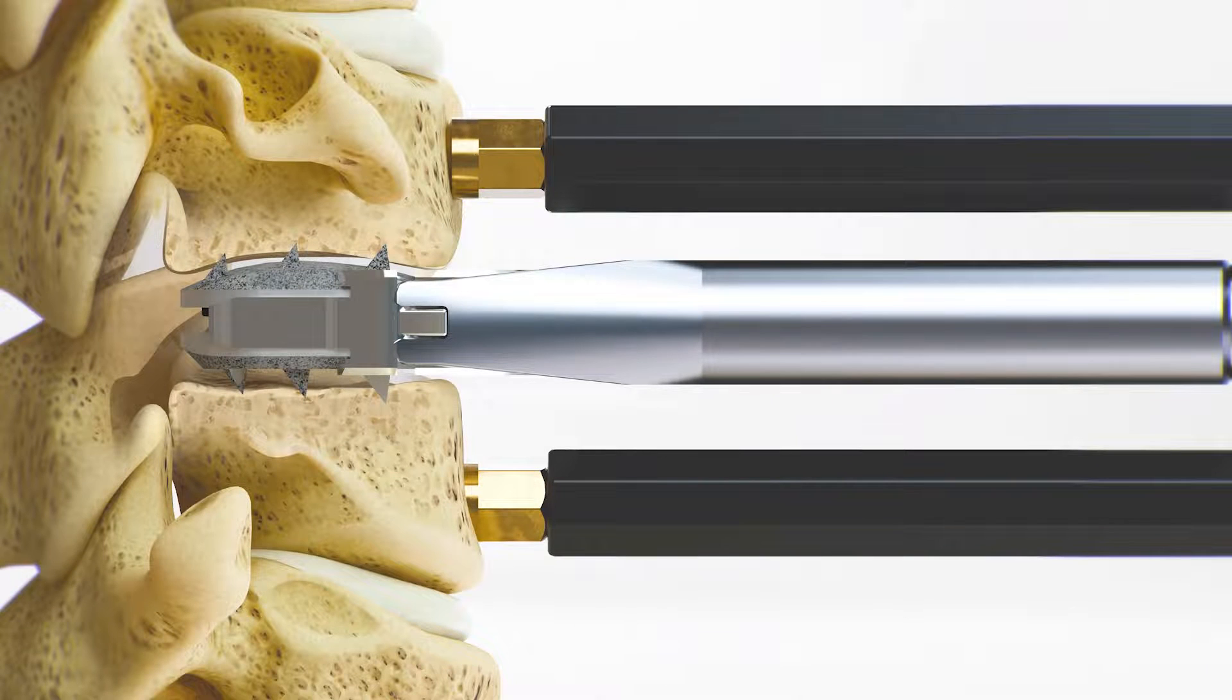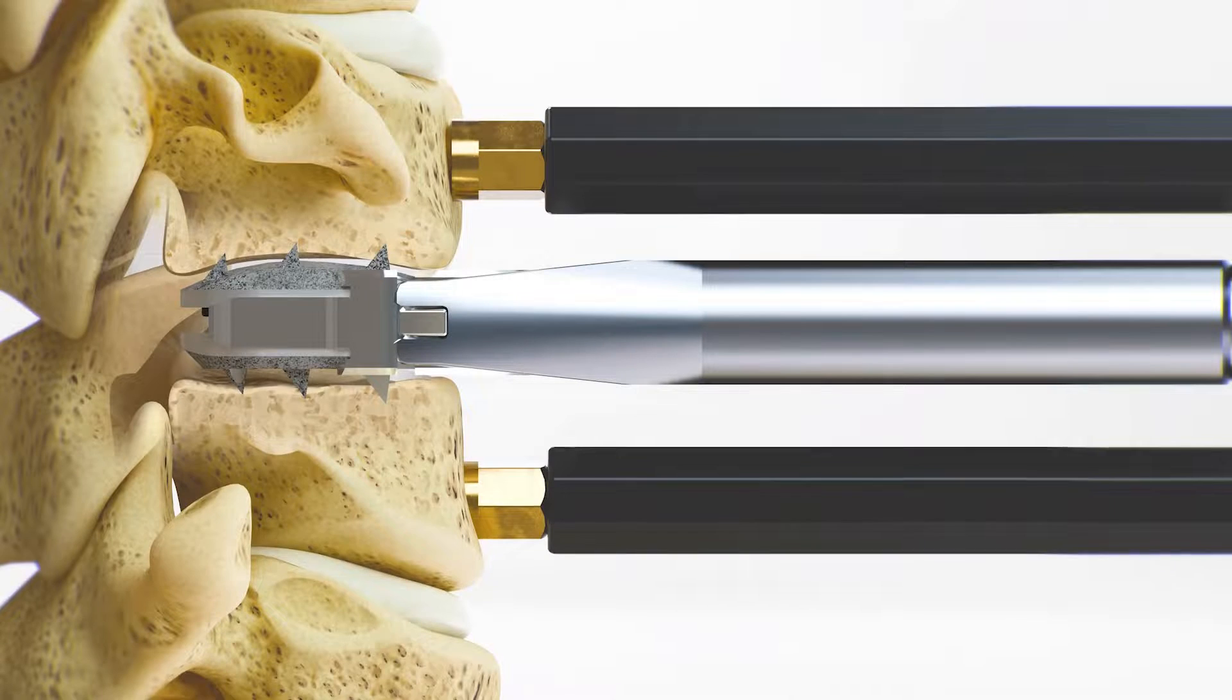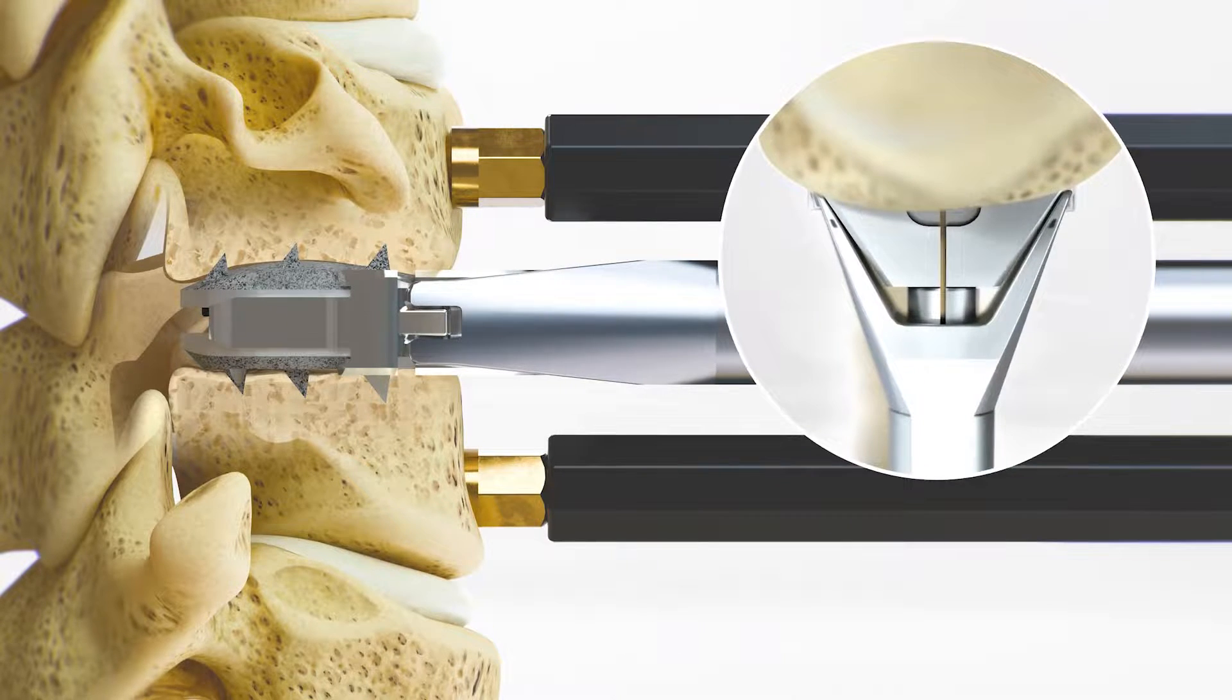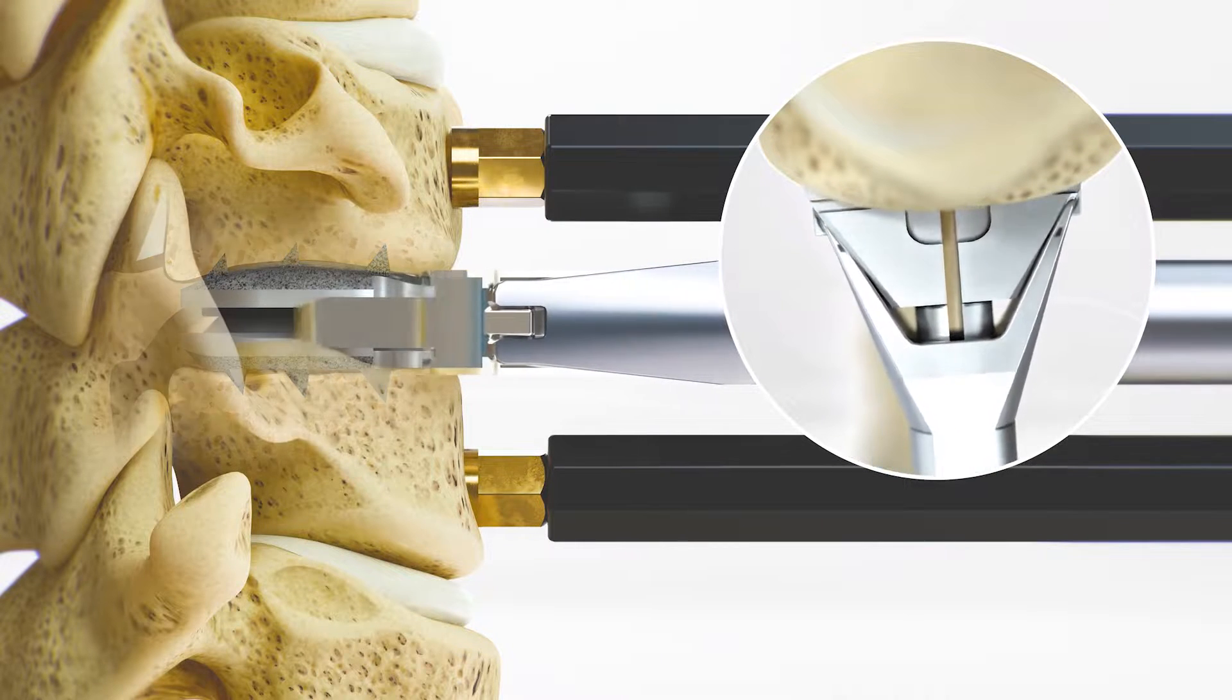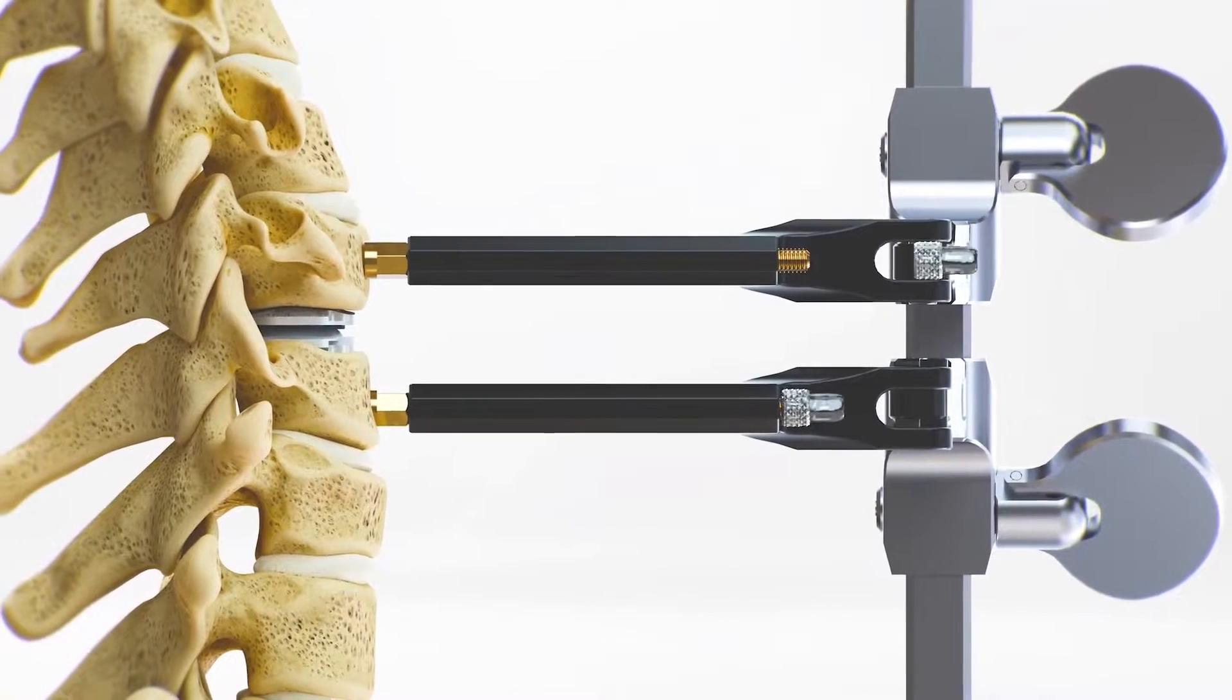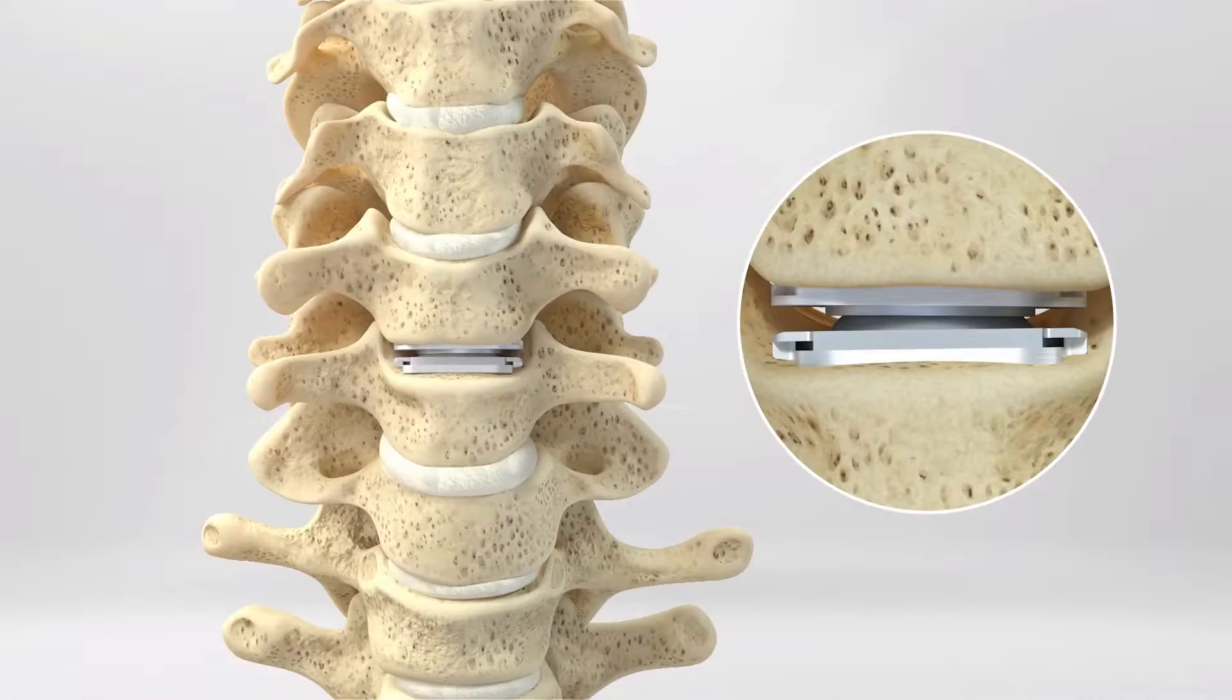Once the correct position of the implant is confirmed under fluoroscopy, release the retainer and apply slight compression with the retainer. Slight compression from the retainer will help the spikes on the implant to penetrate into the vertebral bodies. Once the inserter is loosened, move the inserter laterally, left to right, a few times until the inserter disconnects from the implant. The inserter is then removed and the final implant placement is confirmed.